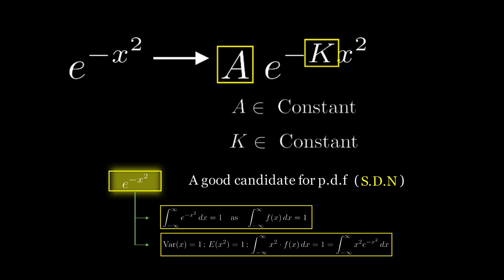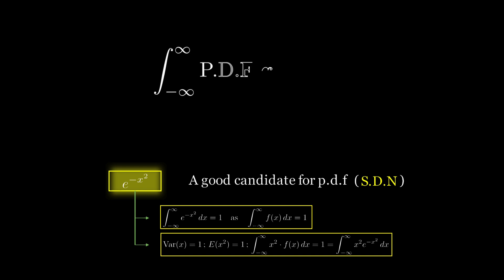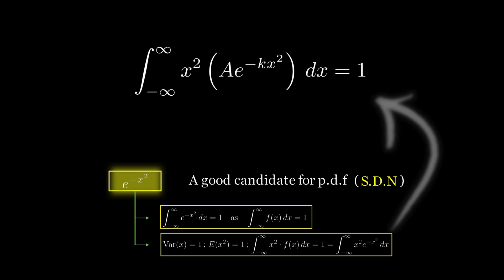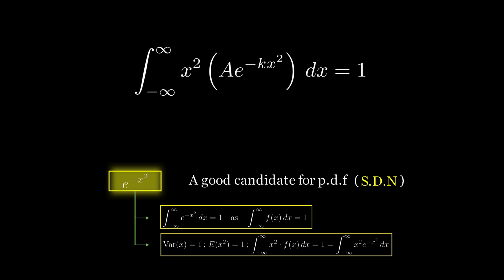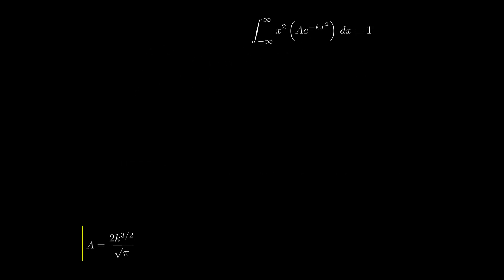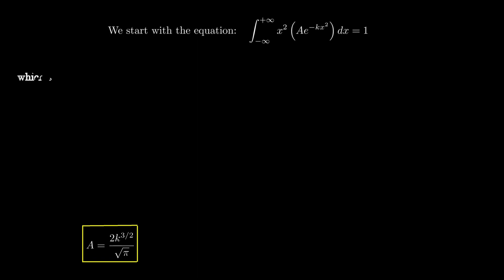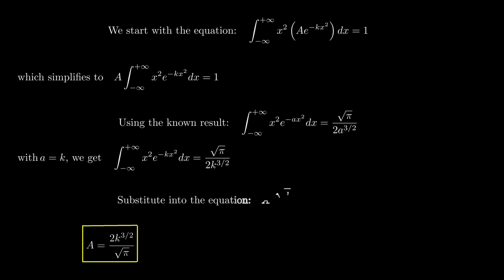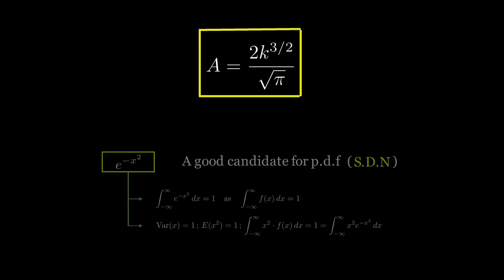Let's apply the first property: variance must equal 1. When we integrate from minus infinity to plus infinity of a · e^(-kx²) · x² dx, that equals 1. After a long derivation and integration, we get a = 2k^(3/2) / √π. But a is in terms of k — no worries, we have the other equation to solve for k.